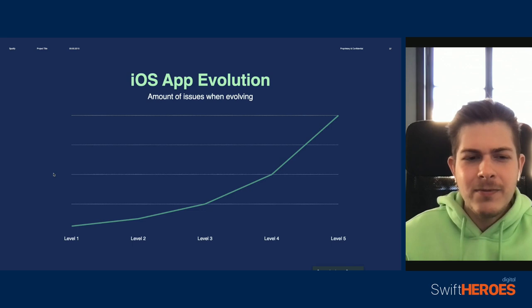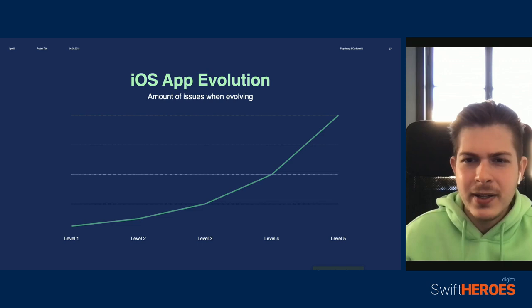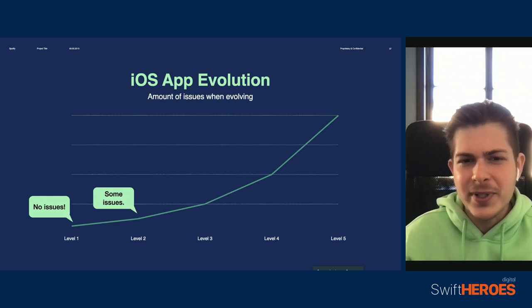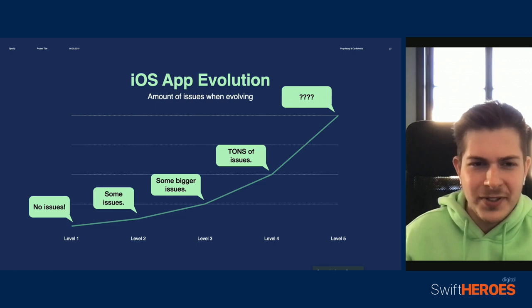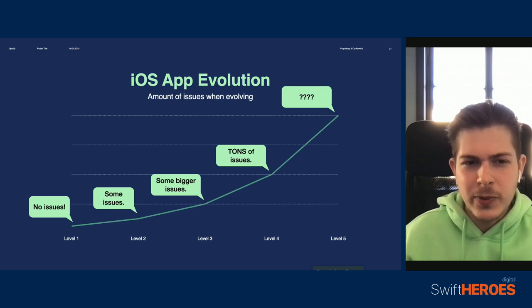So we have gone through a lot of steps to reach this stage. We started with a small single-module app and progressively added more features until we reached something at the level of Spotify. And what you might have noticed is that the larger we got, the more problems we had to solve. I think it's not an understatement to say that evolving an app is an exponential problem. The farther along in this graph, the harder it will be to reach the next level. So I'm not sure what a level five app would look like today, but I can definitely say it would probably be extremely difficult to pull off.